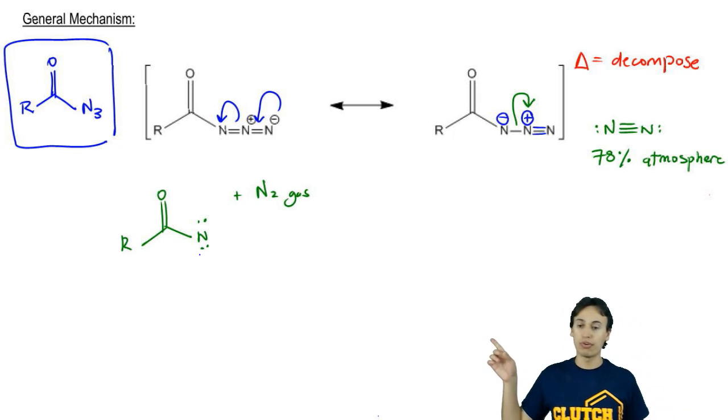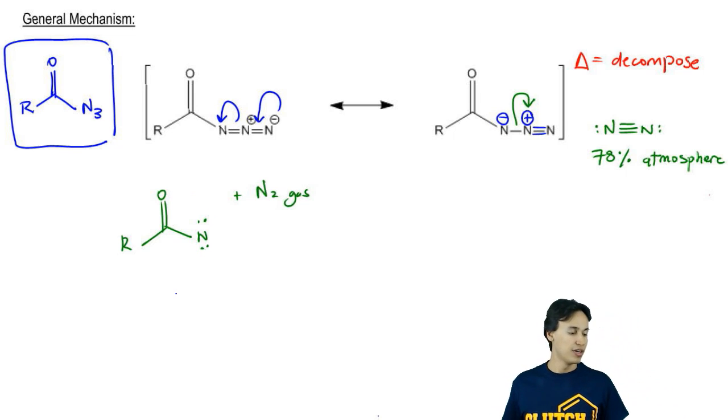This molecule that I drew as a product, it's really an intermediate because it has the right number of valence electrons. Remember that nitrogen wants to have five. It has five, but this is highly reactive because it's not filling its octet. This nitrogen only has six octet electrons.